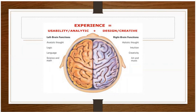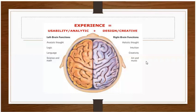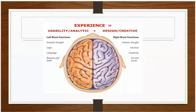The tasks performed by the brain have been assigned to both hemispheres. Different parts of the brain perform different functions. The left hemisphere is attributed with analytical thought, logic, language, science, and math. The right hemisphere is associated with holistic thought, intuition, creativity, art, and music.